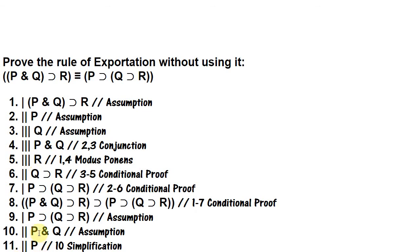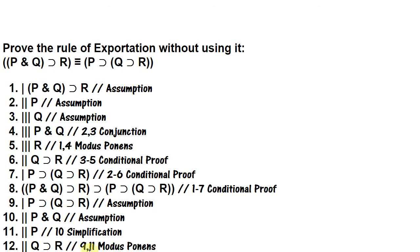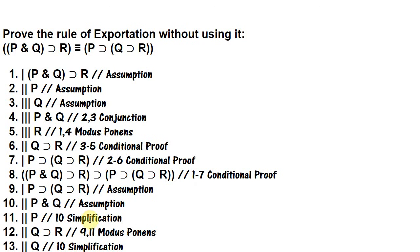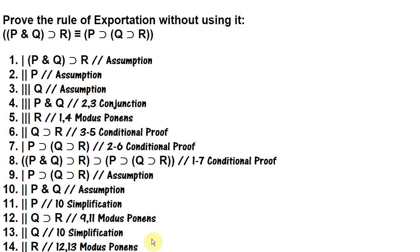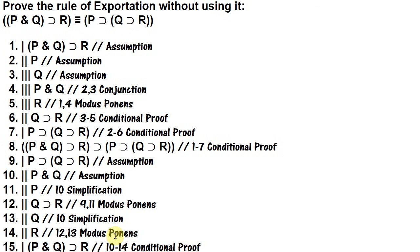So here's what we're going to do. On line 11, we simplify p and q, and now we have p. And we can use p to get if q, then r. So we do that on line 12 through modus ponens. And then we simplify line 10 again and we get q, which will let us use modus ponens again to get r. And now we can close off this conditional proof and we get p and q, then r. If p and q, then r.